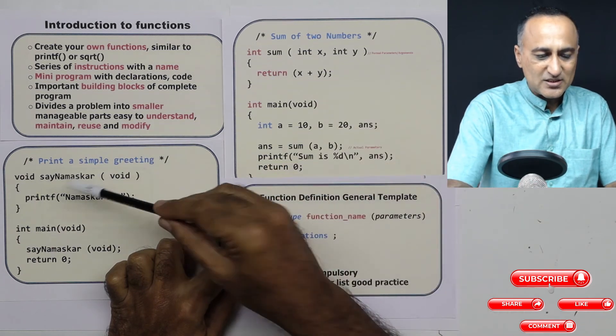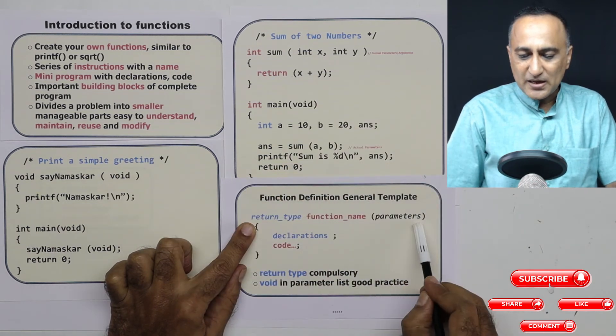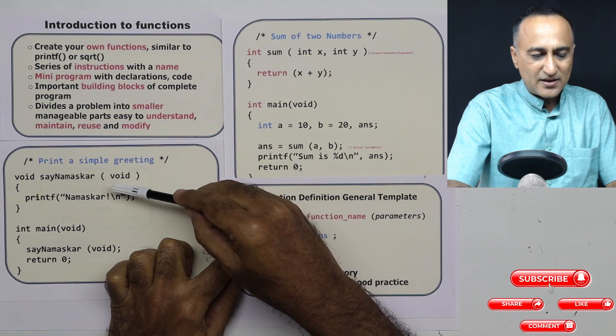Function name: here it was sum, here it was sayNamaskar. Parameters: here it was x and y, here it was no parameters.